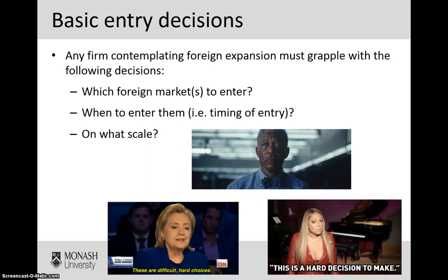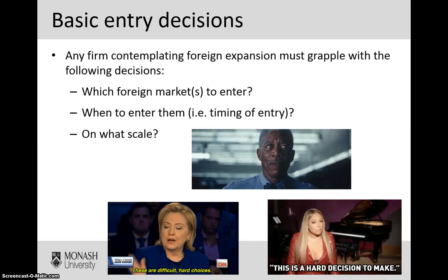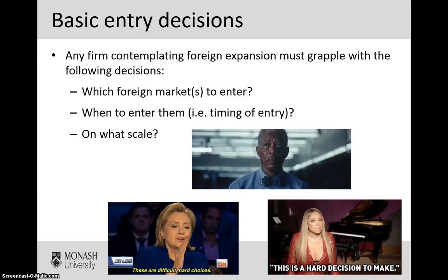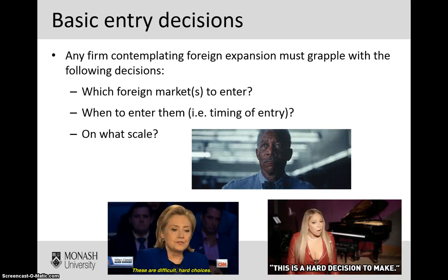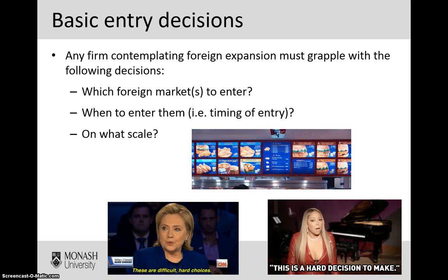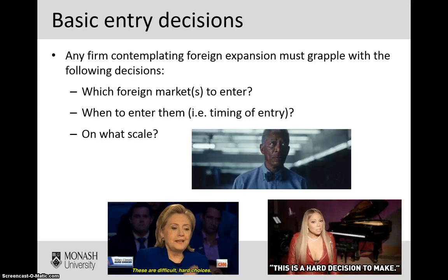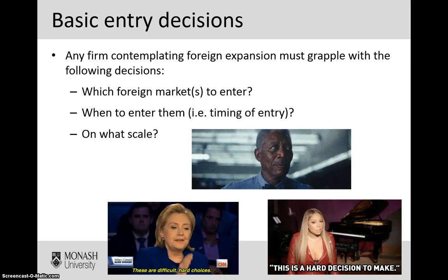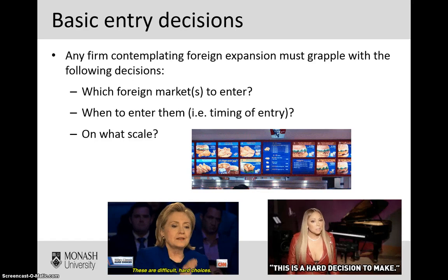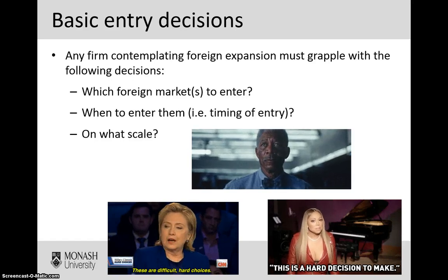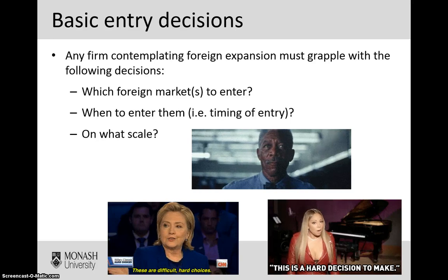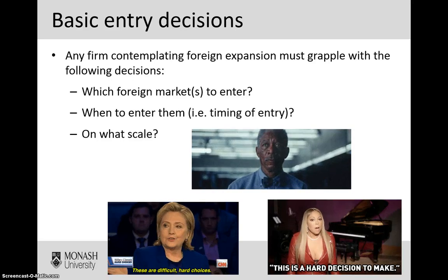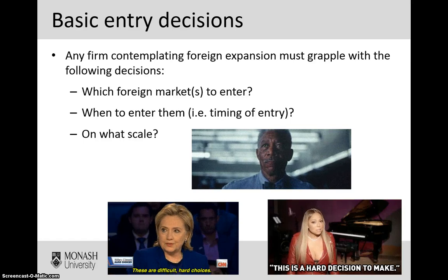There are some key difficult decisions that firms will have to make when they are expanding overseas. In today's lecture we are going to focus on three in particular: firstly, which of the foreign markets you are going to actually enter; secondly, when you want to enter them — what is the most appropriate timing of that international expansion; and thirdly, what is the scale on which you are going to enter that market. We are going to go through each of them and explain how that relates to each of the different entry mode options available when you expand your firm overseas.